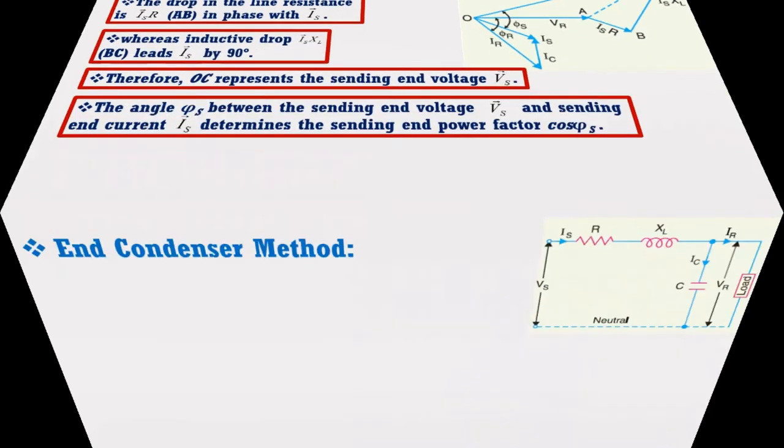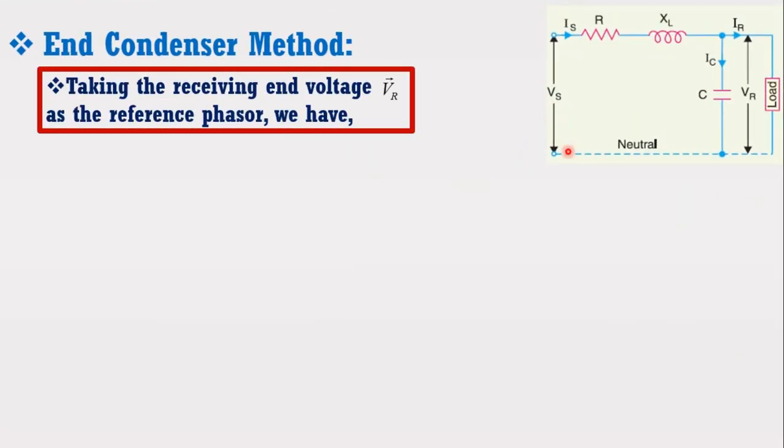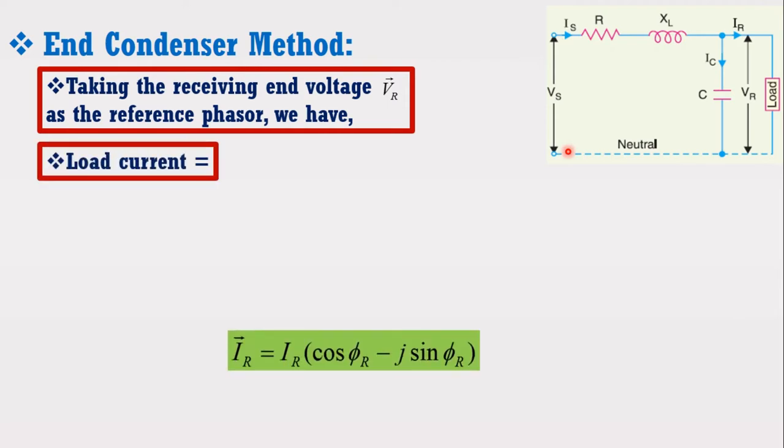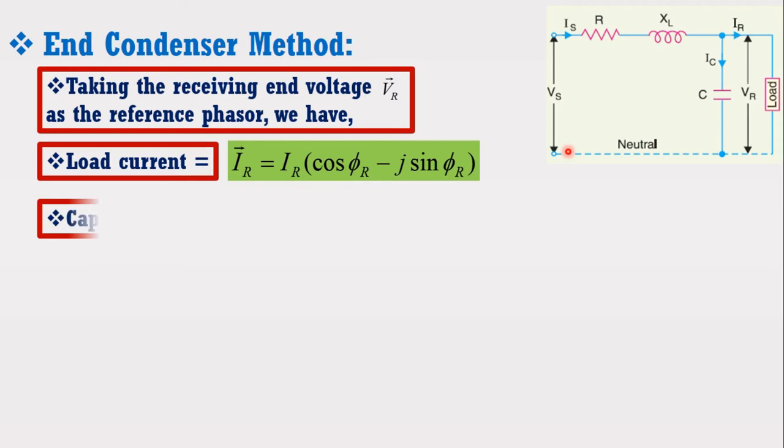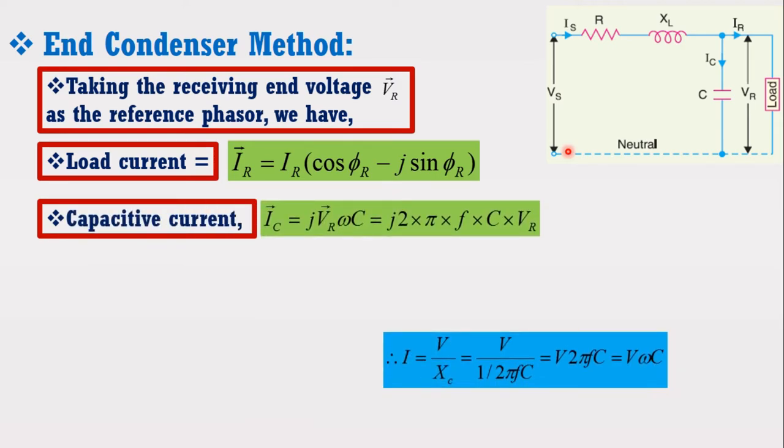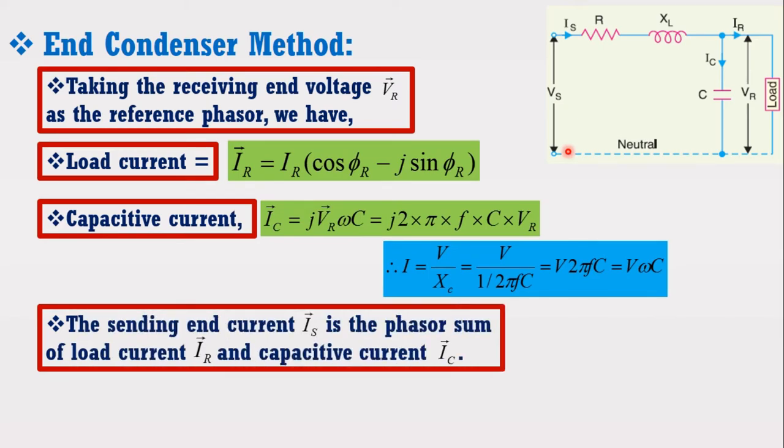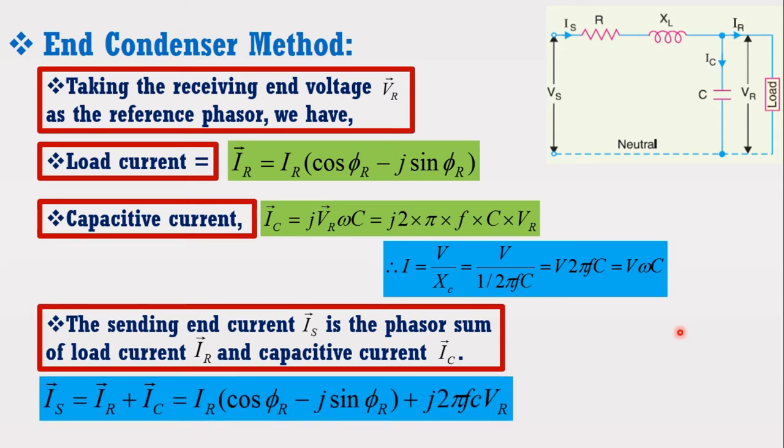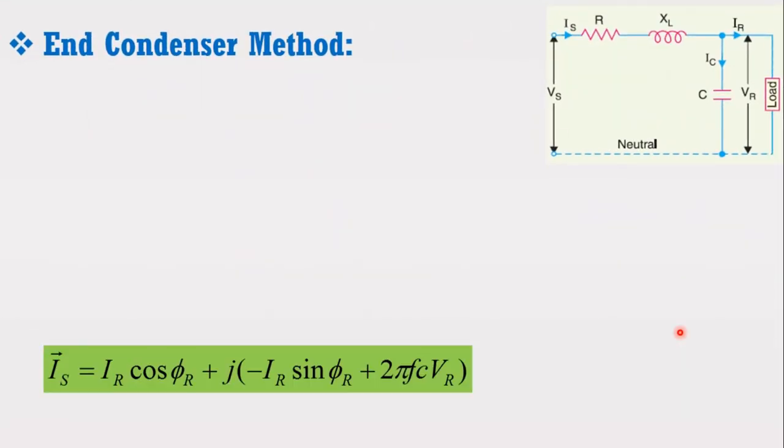Taking the receiving end voltage Vr as the reference phasor, we have load current given as below. Capacitive current is given by the following expression. The sending end current IS is the phasor sum of load current IR and capacitive current IC. By simplifying the above expression, we get the following expression.